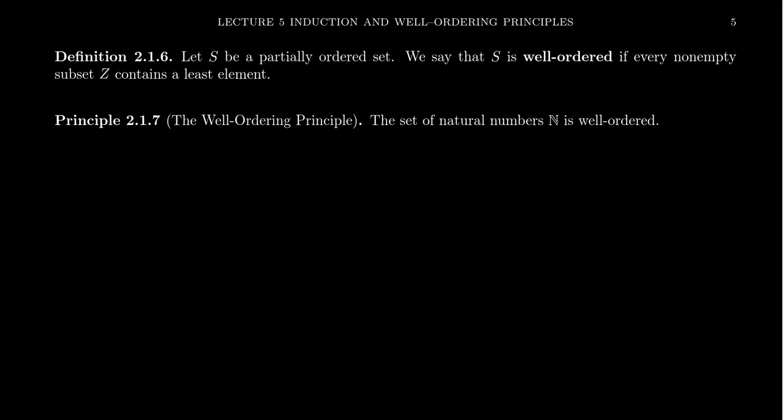The natural numbers are a well-ordered set, and so this is called the well-ordering principle: the set of natural numbers is well-ordered. If you take any non-empty subset of natural numbers, there will always be a smallest natural number inside that set. It turns out the well-ordering principle is equivalent to the induction axiom. The natural numbers are in fact the canonical example of a well-ordered set, and well-ordered sets are trying to generalize this principle.